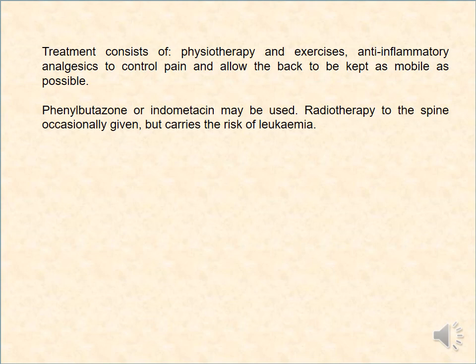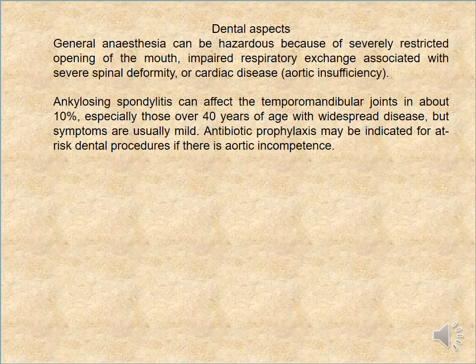Treatment consists of physiotherapy, exercise, and anti-inflammatory analgesia to control pain and keep the back as mobile as possible. Phenylbutazone or indometacin may be used; radiotherapy to the spine is occasionally given but there is a risk of leukaemia. Dental management under general anaesthesia can be complicated by severely restricted mouth opening, impaired respiratory exchange associated with severe spinal deformity, or cardiac disease such as aortic insufficiency. Ankylosing spondylitis can affect the temporomandibular joint in about 10% of cases, especially those over 40 years with widespread disease, but symptoms are usually mild. Antibiotic prophylaxis may be indicated for at-risk dental procedures where there is aortic incompetence.